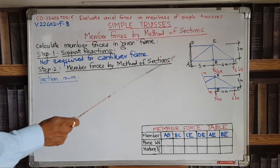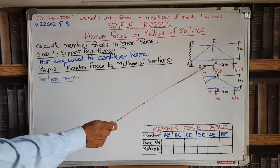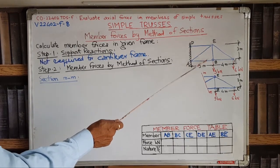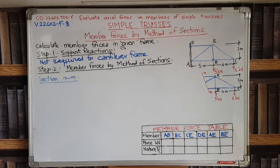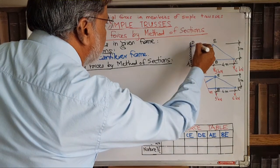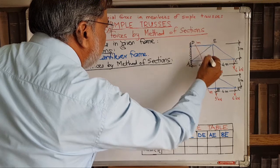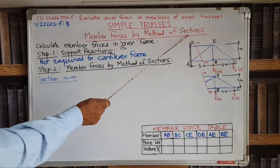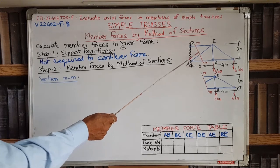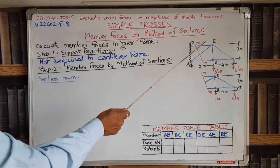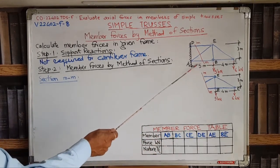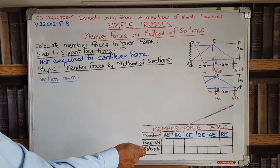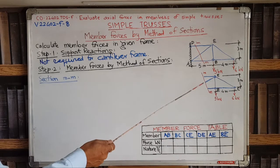We imagine cutting the frame along a line such that members ED, CE, and BA are cut — three members in total — satisfying the condition of maximum three unknowns. We call this cutting line MM. When the frame is cut along MM, we get a left portion and a right portion. The right portion shows the line MM with the three cut members, and the remaining frame with dimensions — five kilometers, six kilometers, four meters — with joints E, B, C all present.